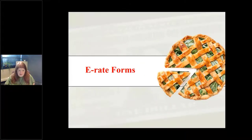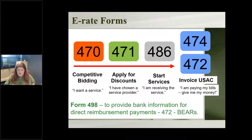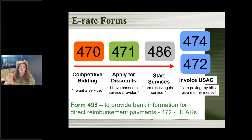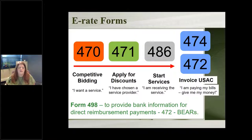As I mentioned earlier, there are multiple forms in the E-rate process that you must submit throughout the year. The first three forms everyone does — no questions asked: 470, 471, and 486. The last form depends on how you're receiving your discount. And then there's one extra form, a 498, if you're going to receive reimbursements — reimbursements directly to you rather than your service provider discounting your bills automatically — you have to provide USAC with your banking information.